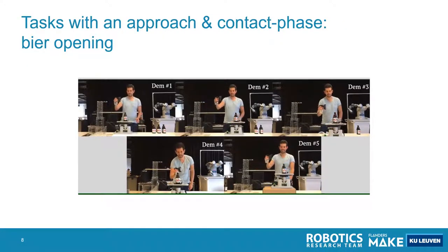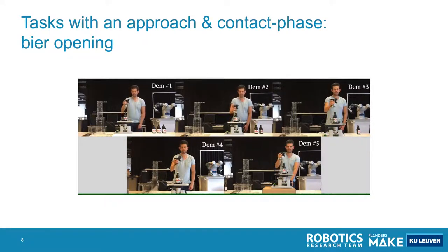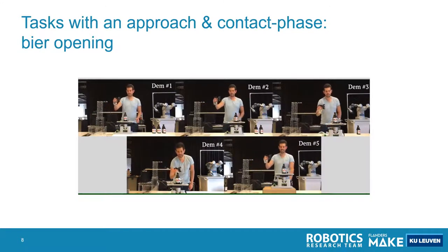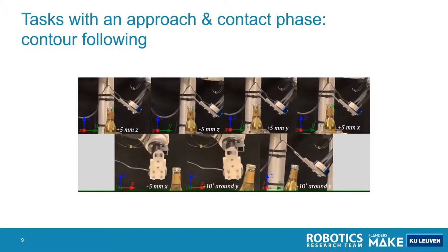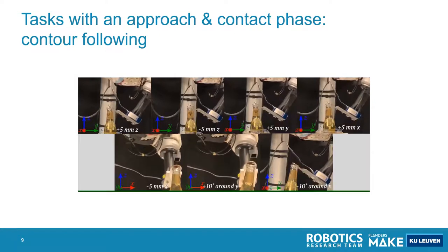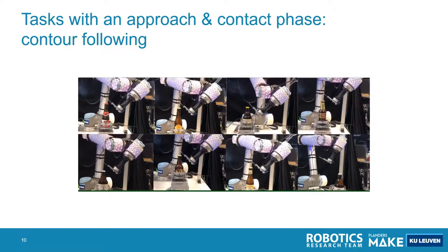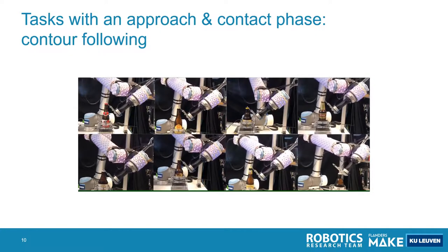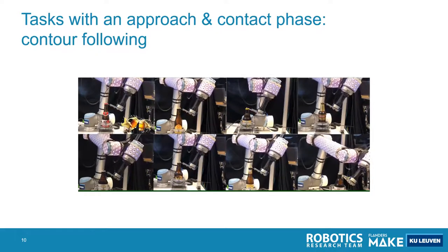We use the same approach to define a more general task consisting of an approach phase and a contact phase. Using these more general tasks, we first demonstrated a beer opening case, where you move towards the beer in free space until you make contact, and then while maintaining contact, you open the beer. After these demonstrations, we can execute the task, and you can see that even when there are variations in position and orientation, we can still successfully execute the task — and even when we change the type of bottle, the task is still accomplished. So the robot has learned the correct combination between poses, positions, and wrenches.